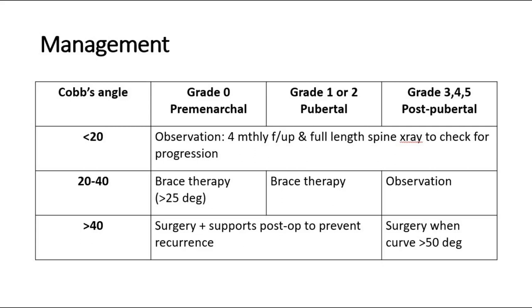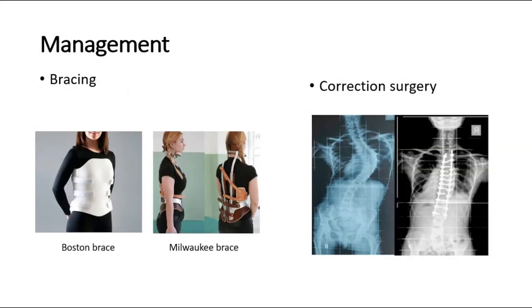If the Cobb angle is more than 40 degrees, which is very severe, surgery can be offered along with post-operative support to prevent recurrence. If already post-pubertal, surgery may be offered if the curve is more than 50 degrees to avoid complications. The types of bracing include the Boston brace and the Milwaukee brace. These braces can prevent progression of the scoliosis; however, they do not improve the deformity.